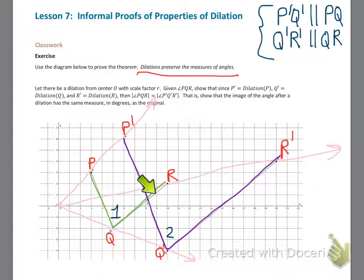So Q prime, since Q prime, R prime is parallel to Q, R, Q prime, P prime can't also be parallel to Q, R. So it has to intersect it. Okay, so this point of intersection is going to be important for our proof. So we're going to label it, let's label it in blue, label it point B right here.